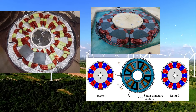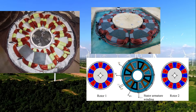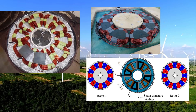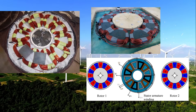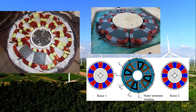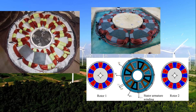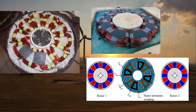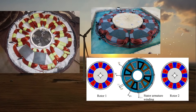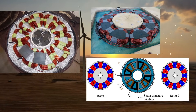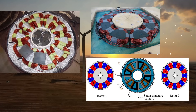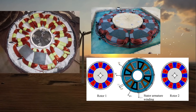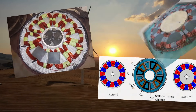The only calculations we make are the geometric proportions and the ratio of the number of magnets to the number of coils. We choose the thickness of the steel disc by feel. To do it right, we need to calculate the electromagnetic parameters of the generator. We need to determine and calculate the following parameters.